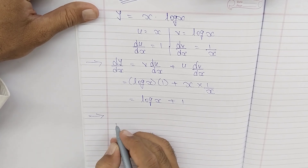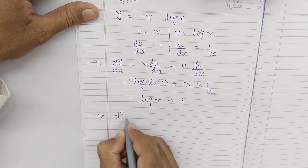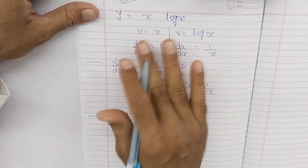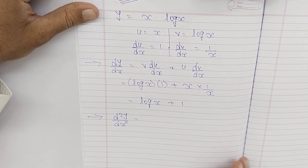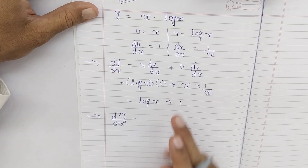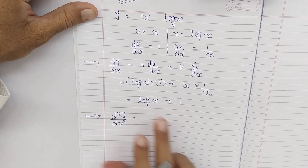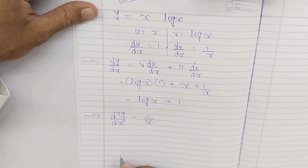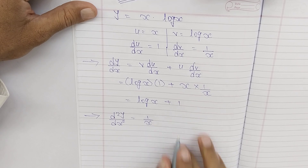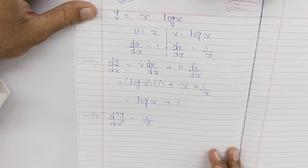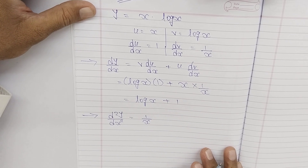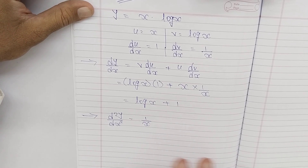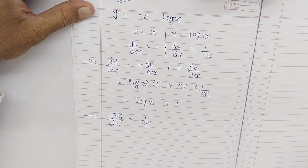Ab mujhe karna hai double derivative, d²y/dx². Double derivative mein uv product rule nahi lena hai, kyunki yahan plus hai, multiply nahi. So log(x) ka derivative 1/x hota hai, aur 1 ka derivative 0 hojata hai. Isliye double derivative d²y/dx² = 1/x.